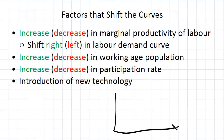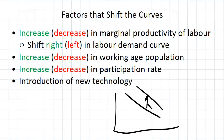Now if we draw our marginal productivity of labor curve, when we say an increase in marginal productivity of labor, we mean this curve being pushed up, or equivalently you could see it as a shift to the right. So if this curve is shifted to the right, then the labor demand curve we derive from that is also shifted to the right.